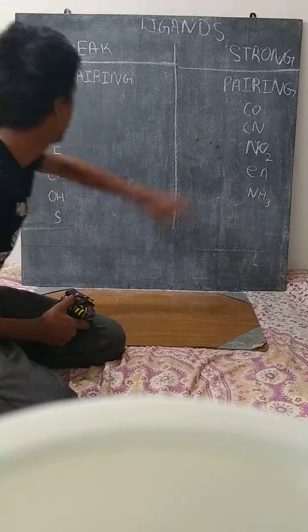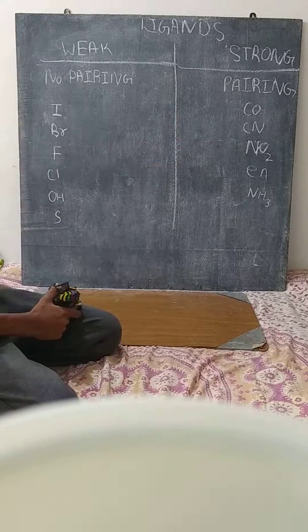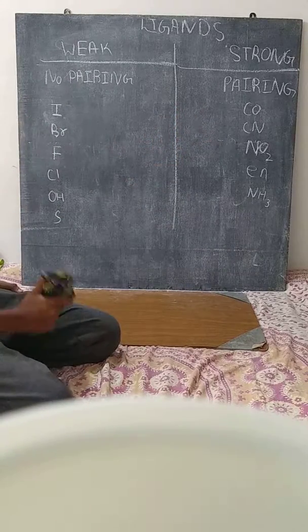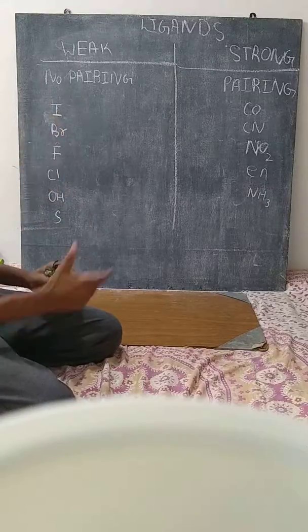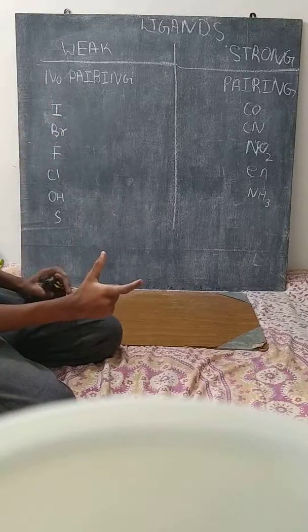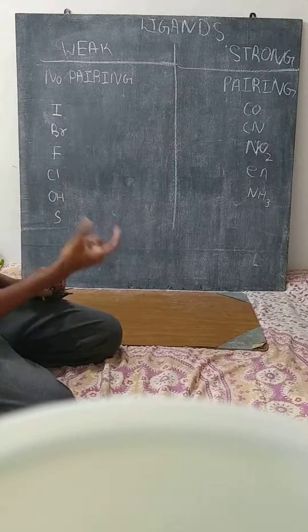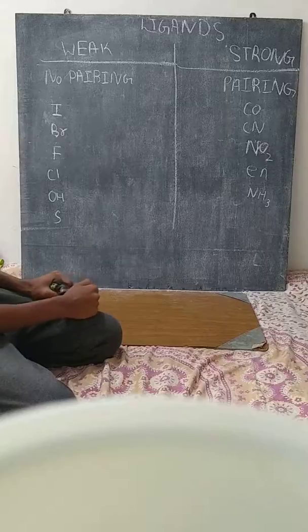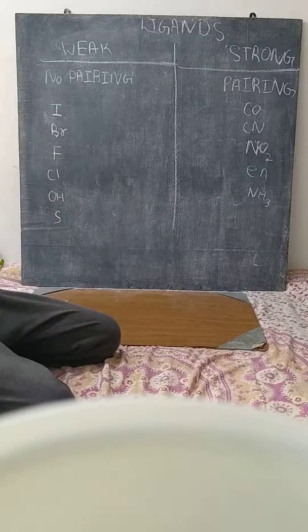In this list, there are 5 strong-field ligands and 6 weak-field ligands. Strong-field ligands cause pairing. If it is a strong-field ligand, it pairs; if it is a weak-field ligand, no pairing.